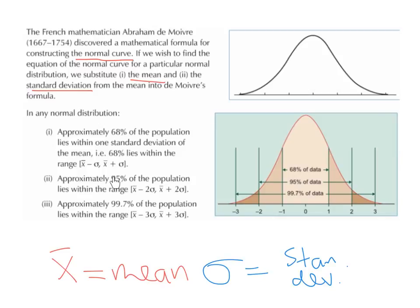Approximately 95% of the population lies within the range of the mean minus 2 times the standard deviation, comma, the mean plus 2 times the standard deviation.